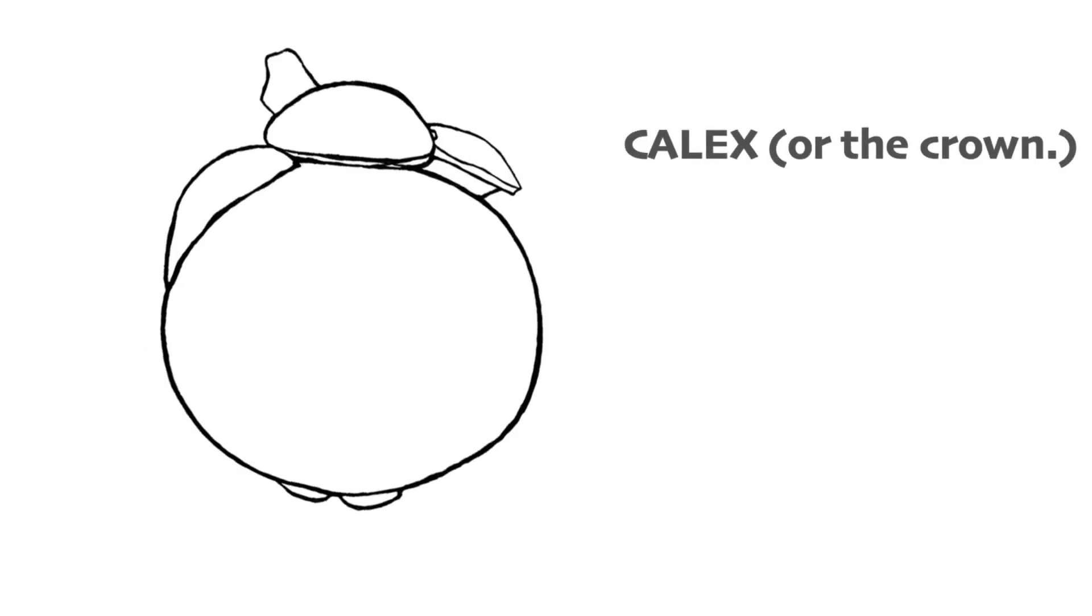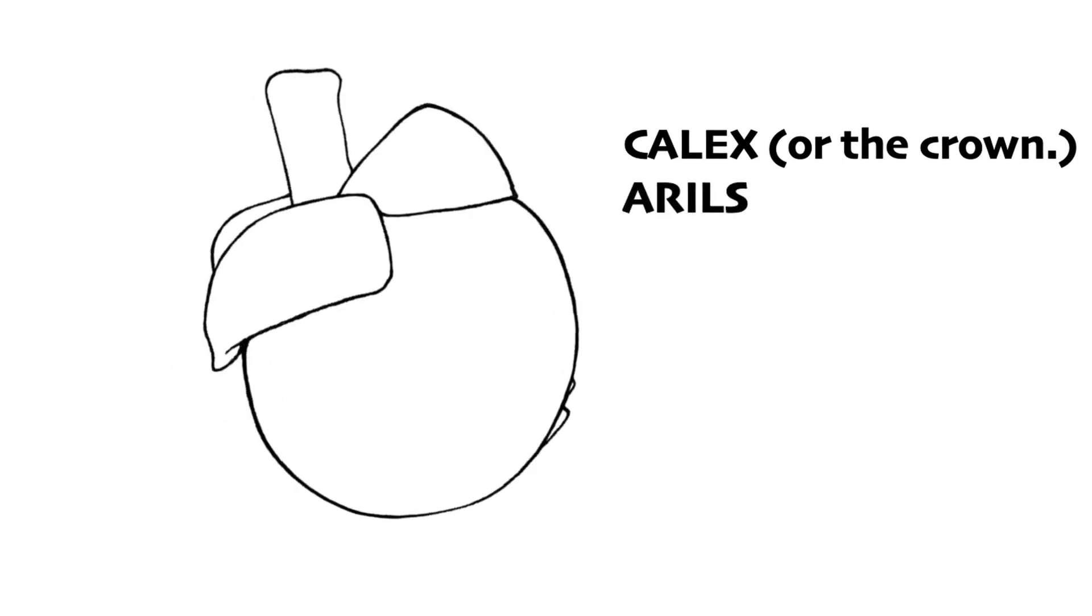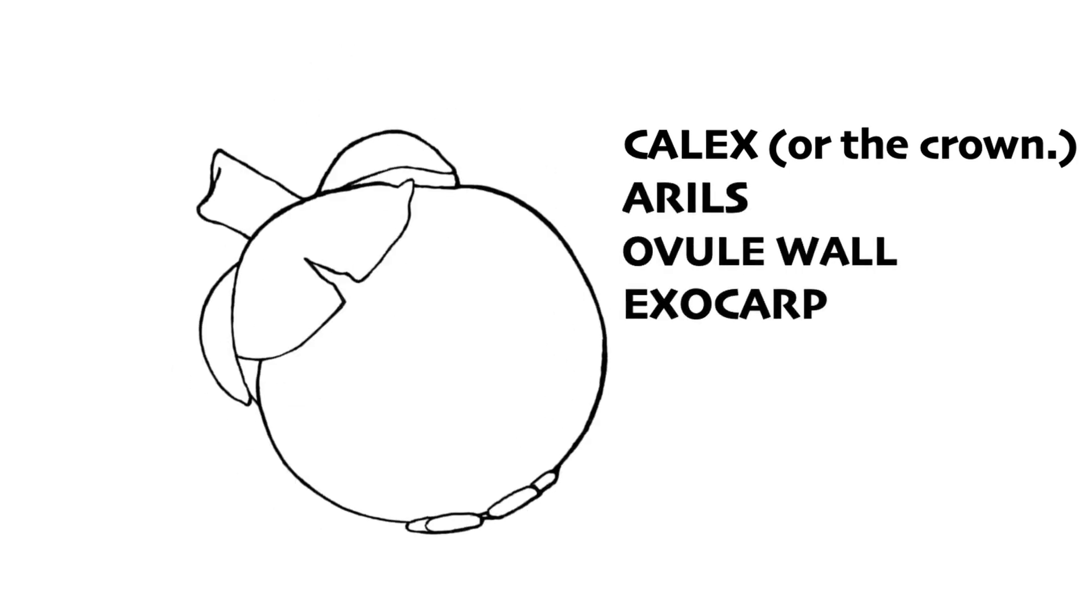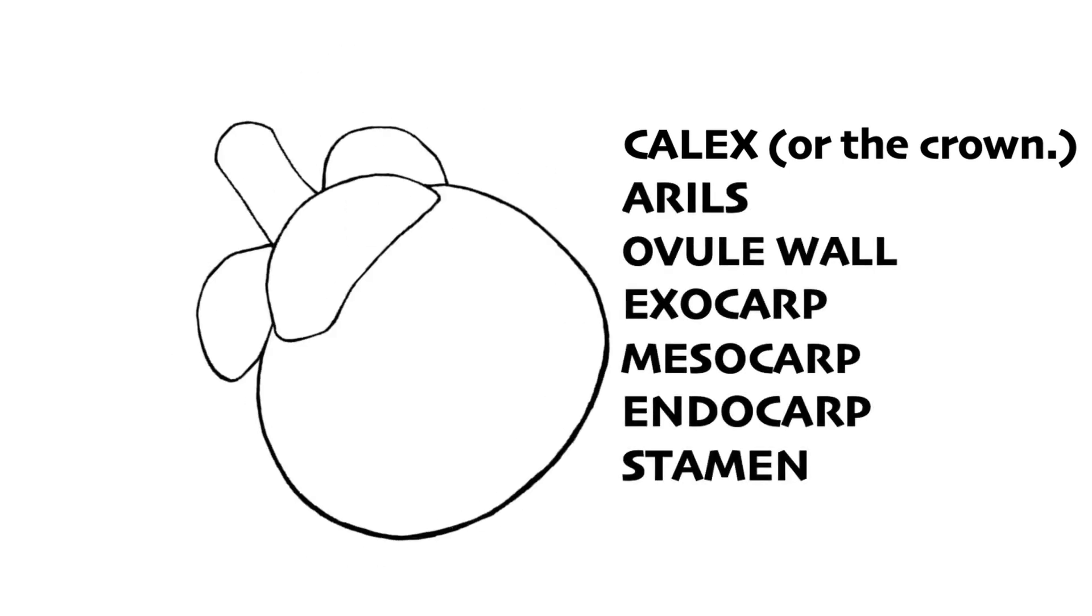In every mangosteen, it is composed of the following: the calyx, or the crown, aryls, ovule wall, the exocarp, mesocarp, endocarp, and stamen.